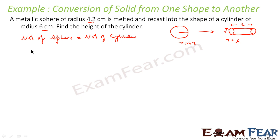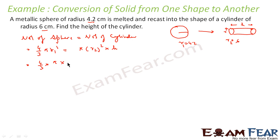Now, the volume of the sphere is 4/3 π r1³ — let this sphere radius be r1 and the cylinder radius be r2 to avoid confusion. This will be equal to the volume of the cylinder, that is π r2² h. Since we know r1 and r2, we can find the value of h very easily. So let's put the values: 4/3 π into (4.2)³ equals π into 6² into h. The π's cancel.